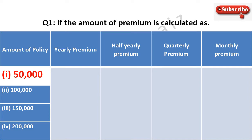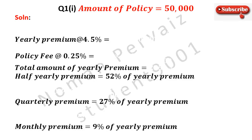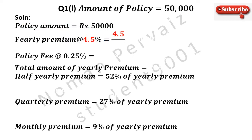This is the table given to us, and we will solve part one by using value of 50,000. Let's see its solution. Here we write all the values given in the question for your convenience. As policy amount is 50,000, we will calculate the yearly premium at the rate of 4.5%. The percentage sign is removed by dividing with 100, multiplied with policy amount which is 50,000. Now 4.5% multiplied with 50,000 becomes 2,25,000.